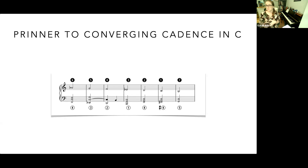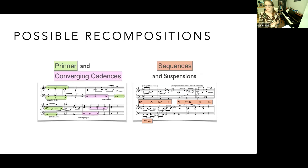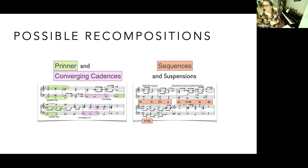That does a decent job of modeling what Stravinsky might be up to in the sense that we can hear some of those relationships. We hear those outer voices being present; we have some of those moments of convergence. But it's not an exact match — not as easy to figure out as the Gallo example. So the next thing I do is take those types of schemas and try to recompose them into the musical fabric, trying to do something closer to what Stravinsky actually had in mind.